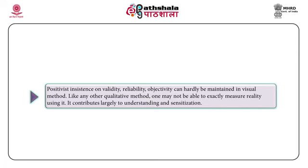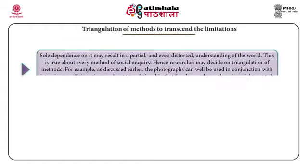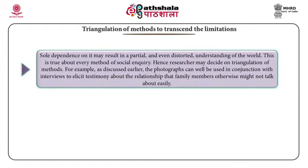Ethical issues surrounding anonymity and informed consent become crucial in case of films and video. Positivistic insistence on validity, reliability, and objectivity can hardly be maintained in visual method. Like any other qualitative method, one may not be able to exactly measure reality using it — it contributes largely to understanding and sensitization. Triangulation of methods is needed to transcend the limitations; sole dependence on it may result in a partial and even distorted understanding of the world. This is true of every method of social inquiry, and hence the researcher may decide on triangulation.